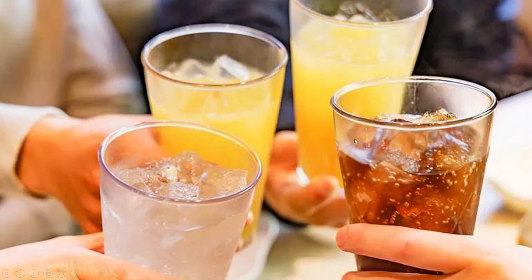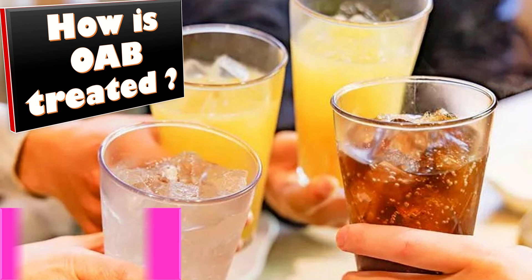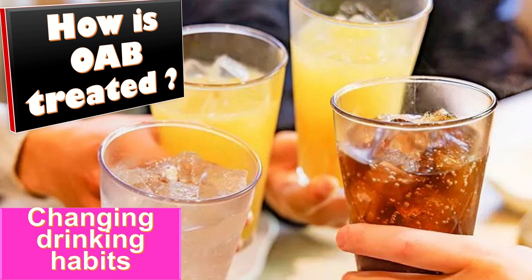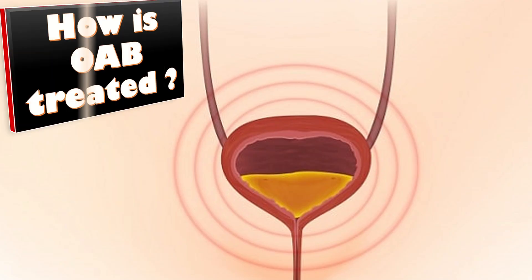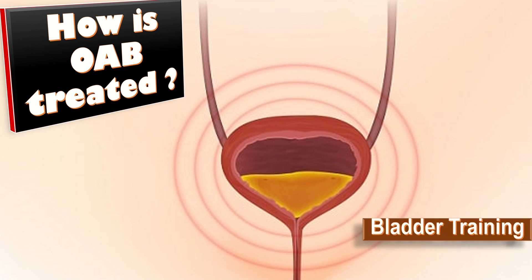How is overactive bladder treated? First of all, we need to change drinking habits. There are a number of drinks that may irritate the bladder, such as tea, coffee, hot chocolate, fizzy drinks, and different types of teas. The second step is bladder training. The purpose of bladder training is to help a patient regain control over the overactive bladder by suppressing its contractions. It is important to note that bladder training takes time and needs a patient's full commitment, as it can take up to three months to show any benefit.